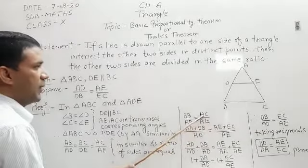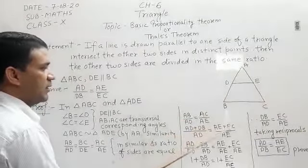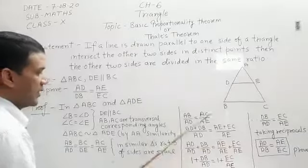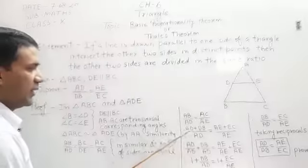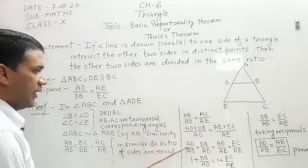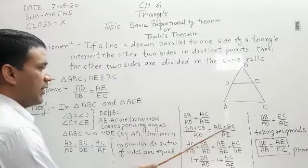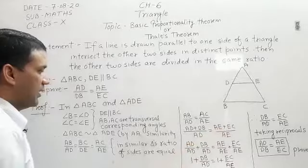Similarly, in place of AC you can write AE plus EC and AE remains as it is. And now you can write this AD in the form of AD and DB separately. So, AD upon AD and DB upon AD. Similarly, AE upon AE plus EC upon AE.